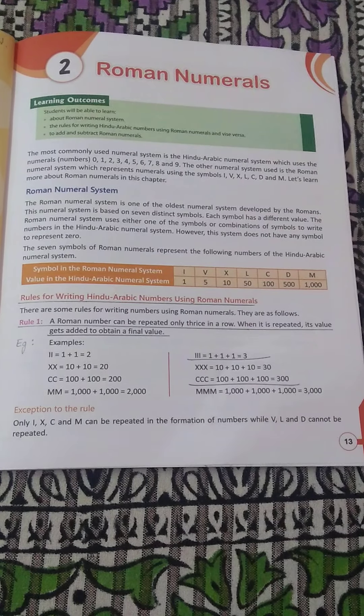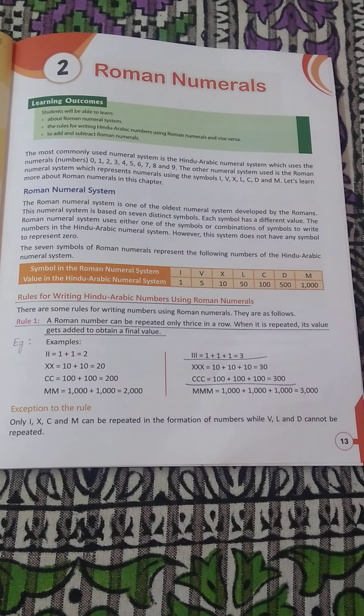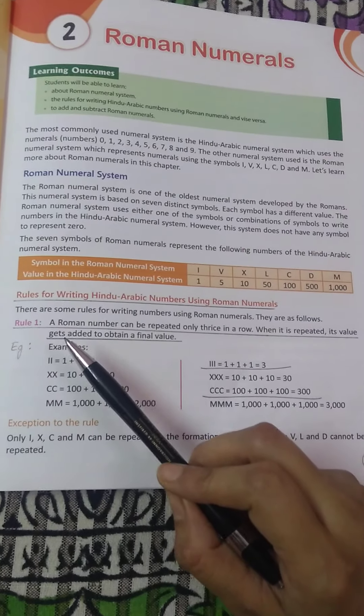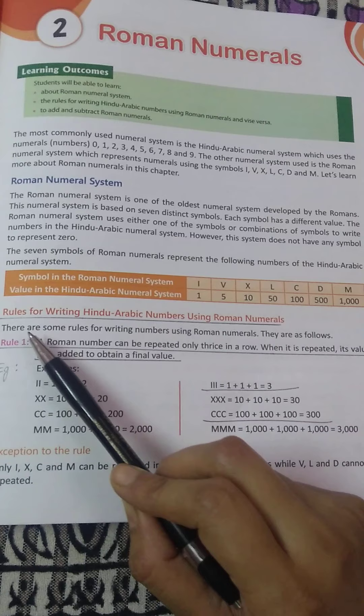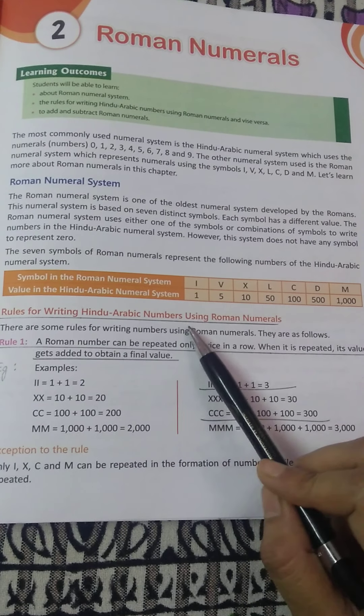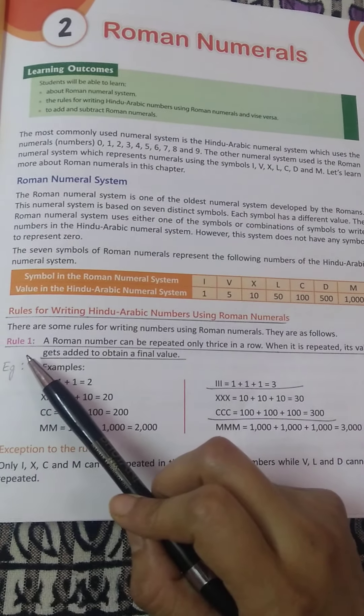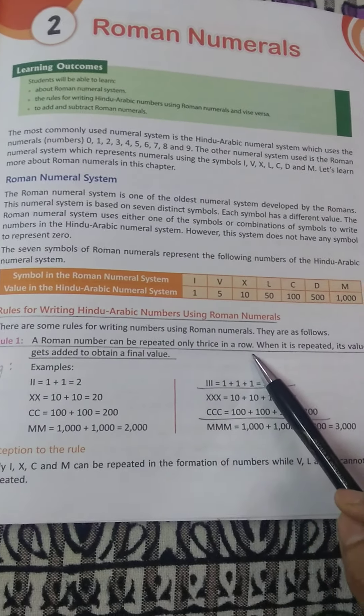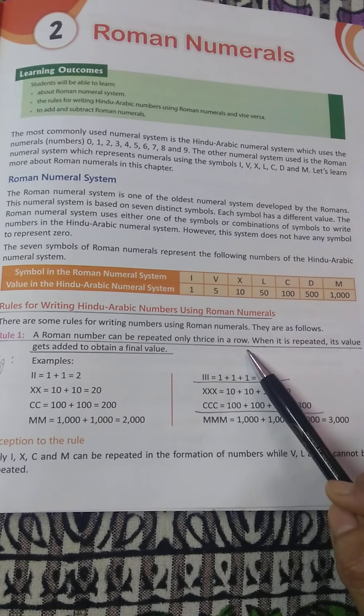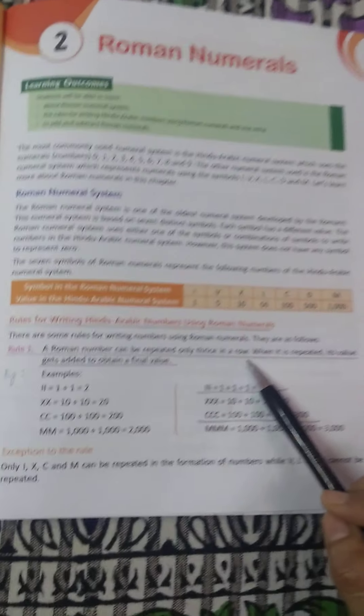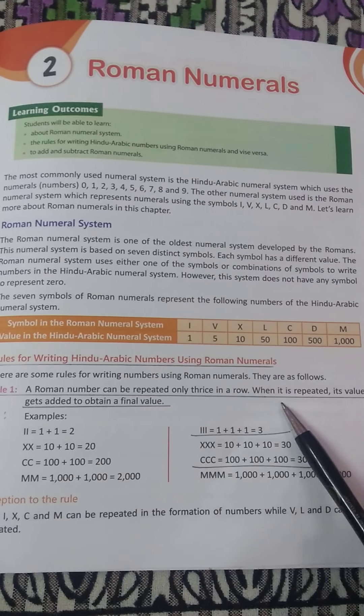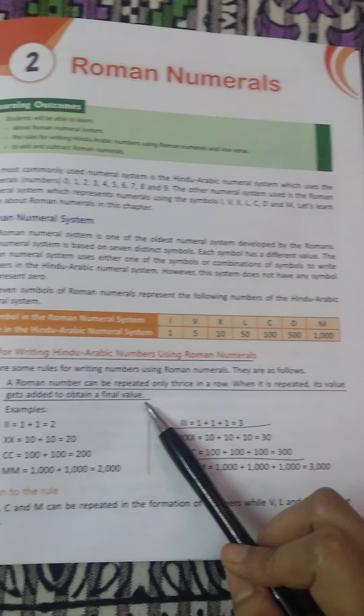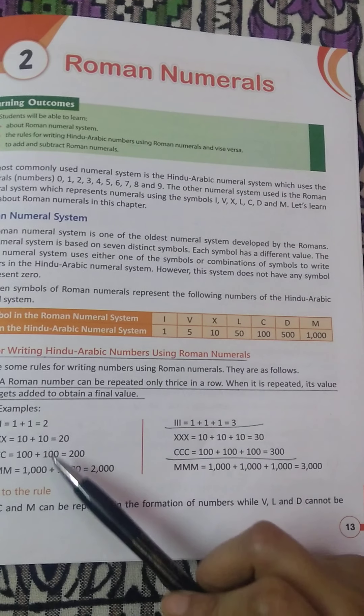Students, for writing the rules you have to open your maths book page number 13 and then whatever I have underlined in this page you are supposed to write it. What it is? Rules for writing Hindu Arabic numbers using roman numerals. Then you will write rule 1. A roman number can be repeated only thrice in a row, that means XXX, CCC, right, III. So when it is repeated its value gets added to obtain a final value.